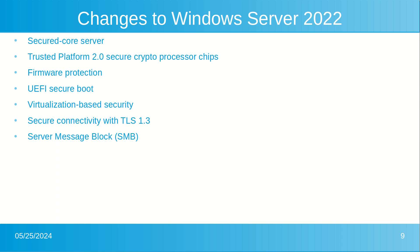By using SMB over QUIC, users and applications can securely and reliably access their data. Mobile users no longer will need to use a VPN to access their file servers over SMB on Windows Server.